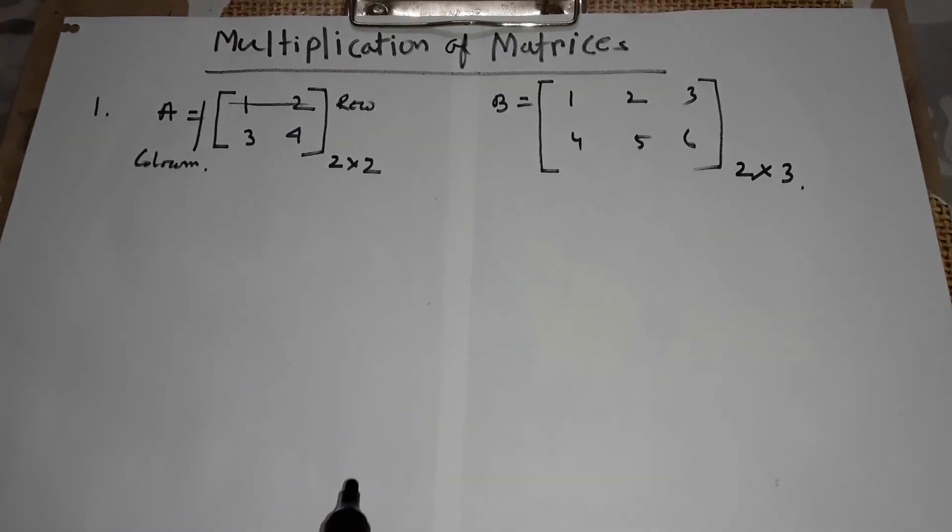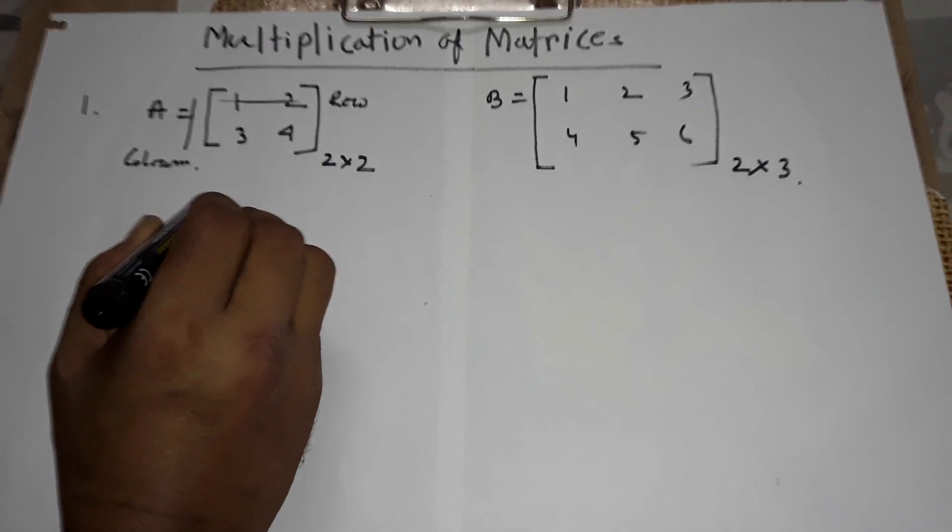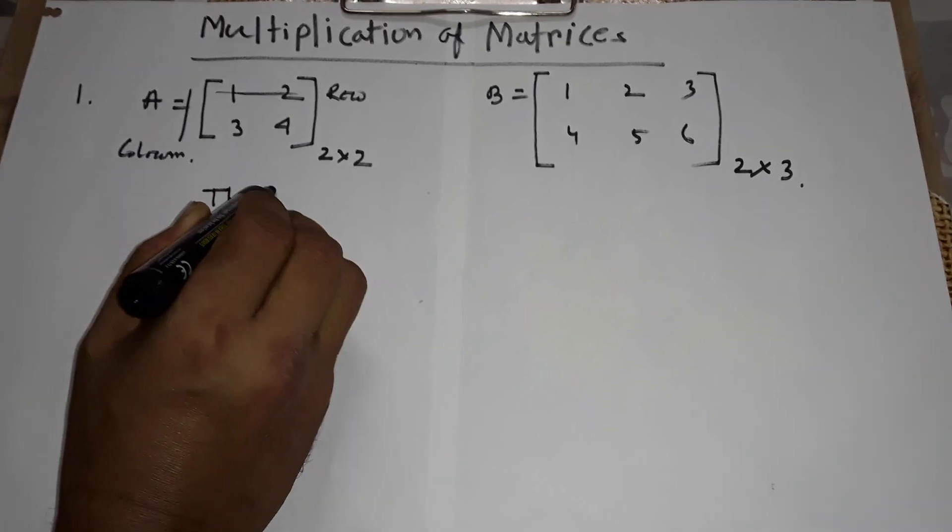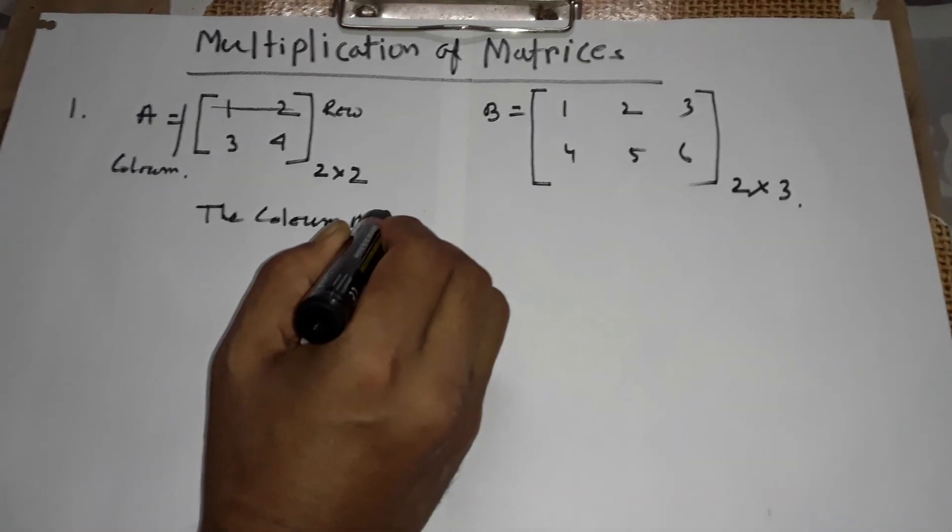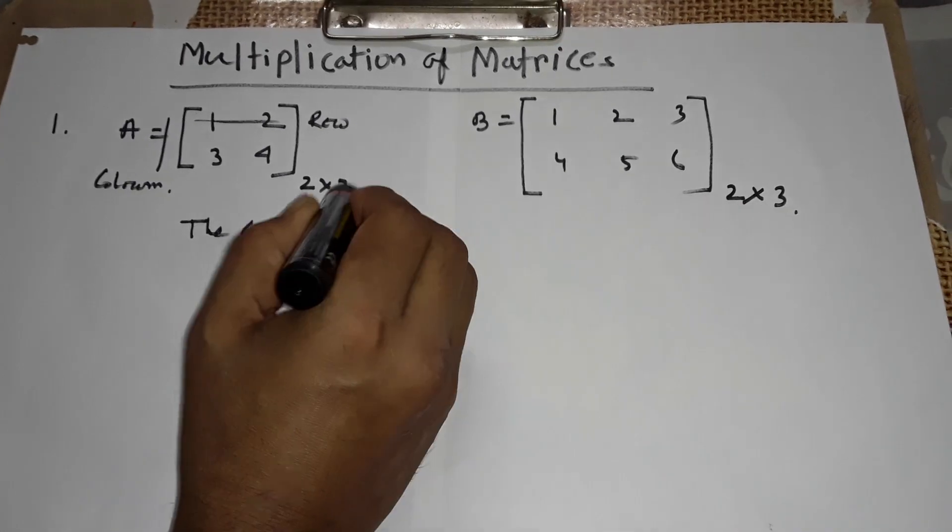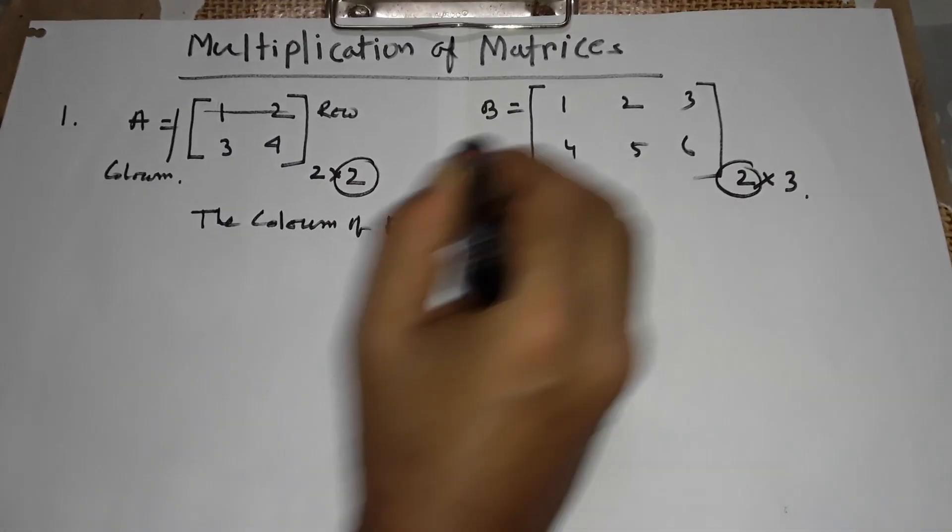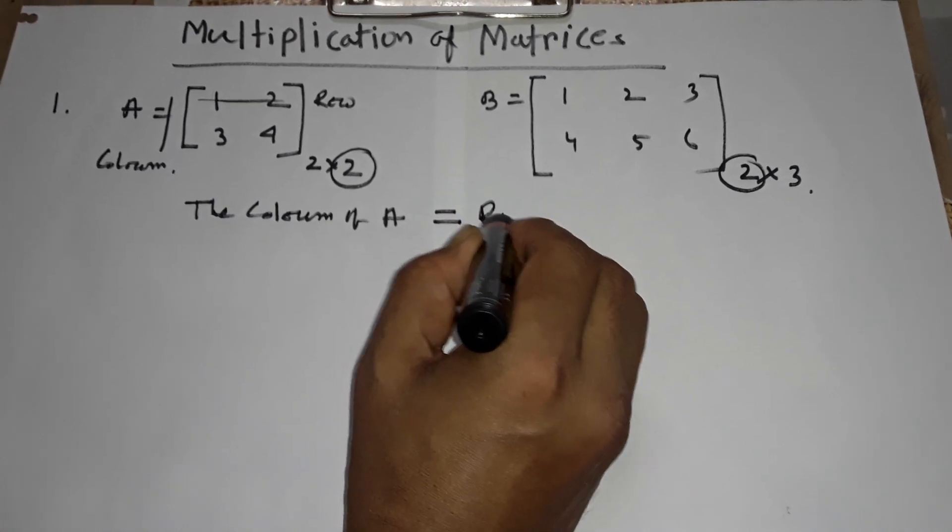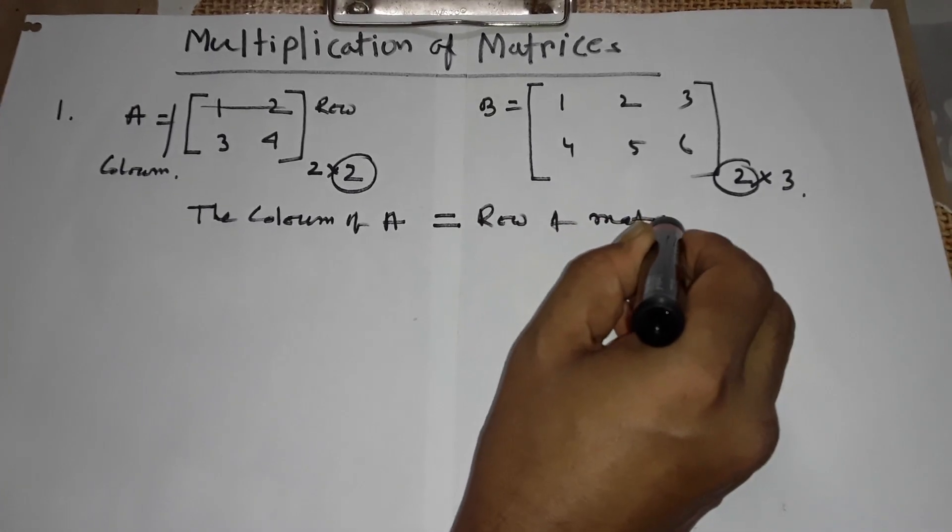Students, you see from here the column of A is equal to the row of matrix B. Row of matrix B.